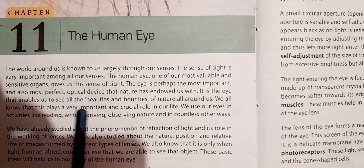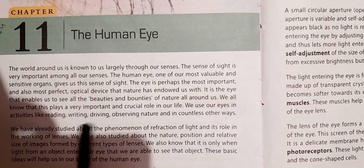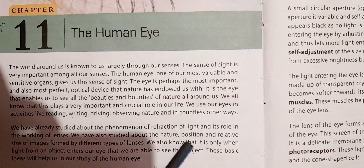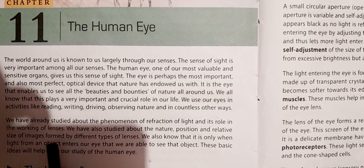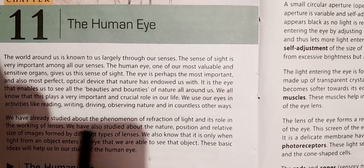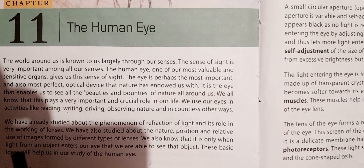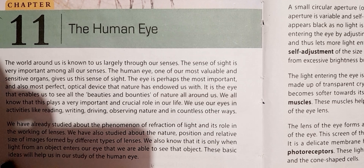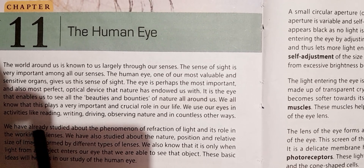We have already studied about the phenomena of refraction of light and its role in the working of the lens. We have also studied about the nature, position, and relative size of images formed by different types of lenses. We also know that it is only when the light from an object enters our eye that we are able to see the object, and this basic idea will help us in our study of the human eye.